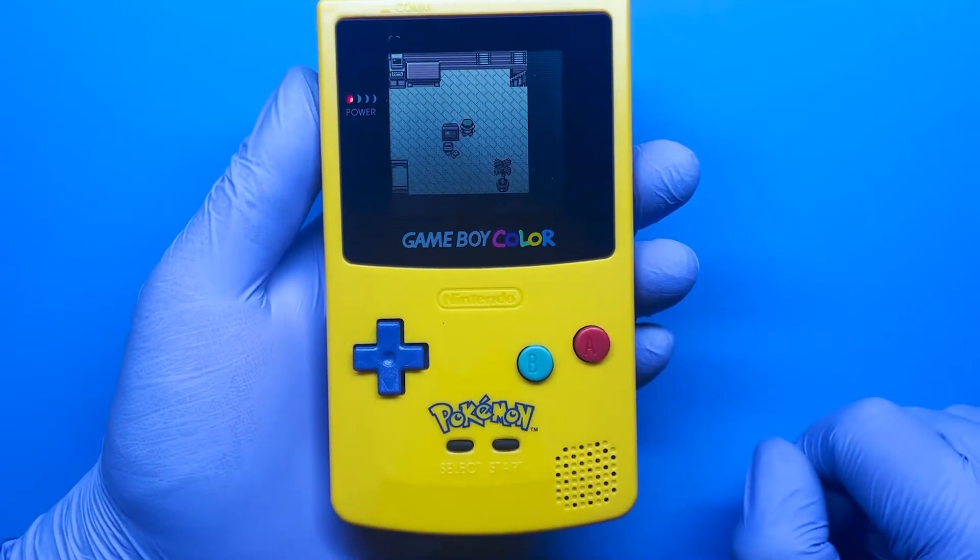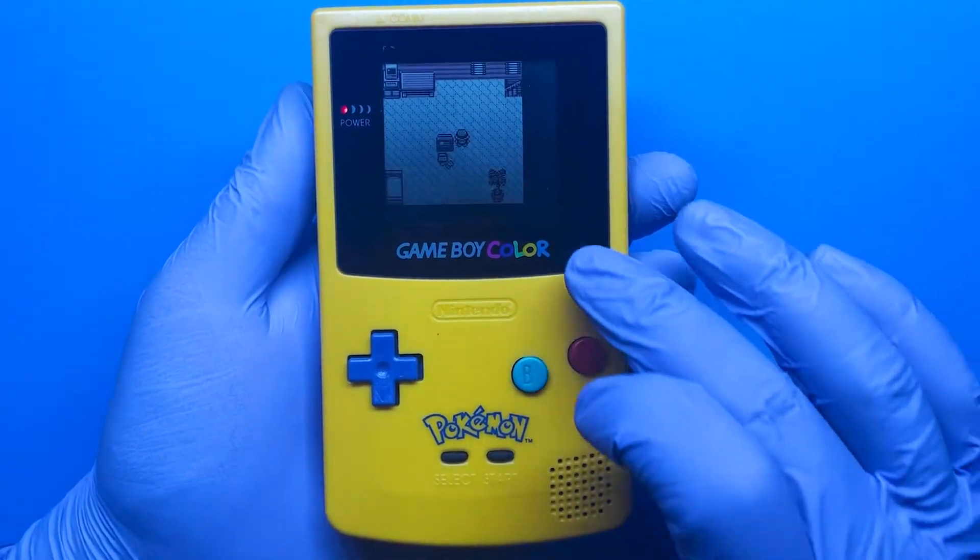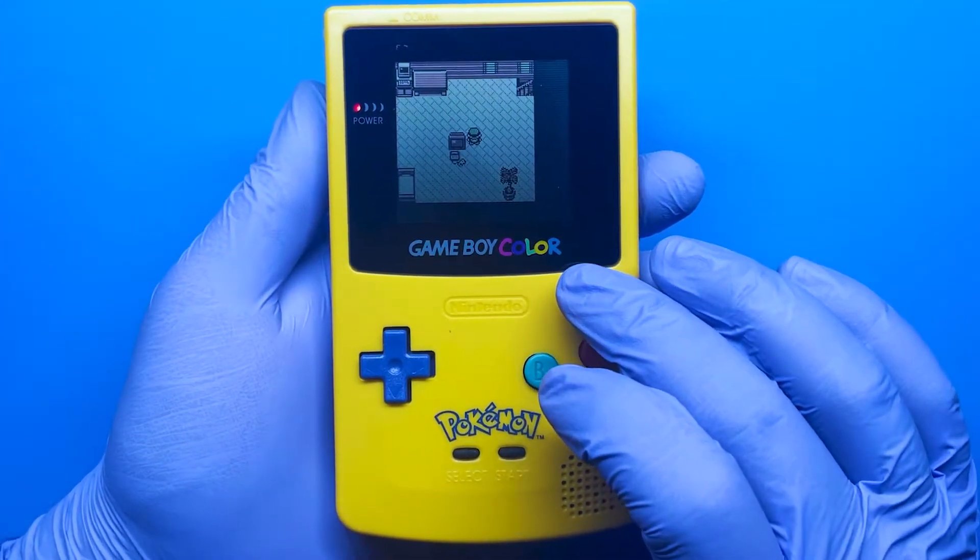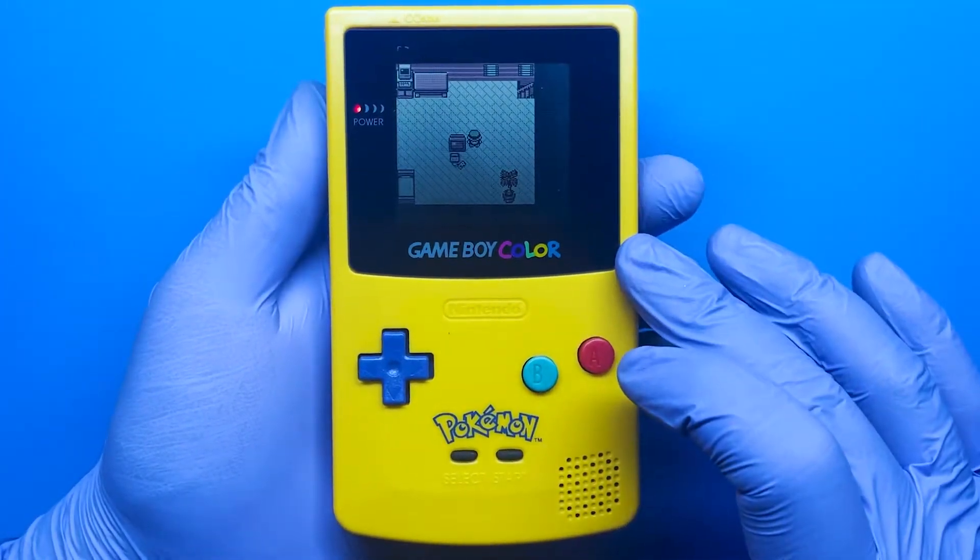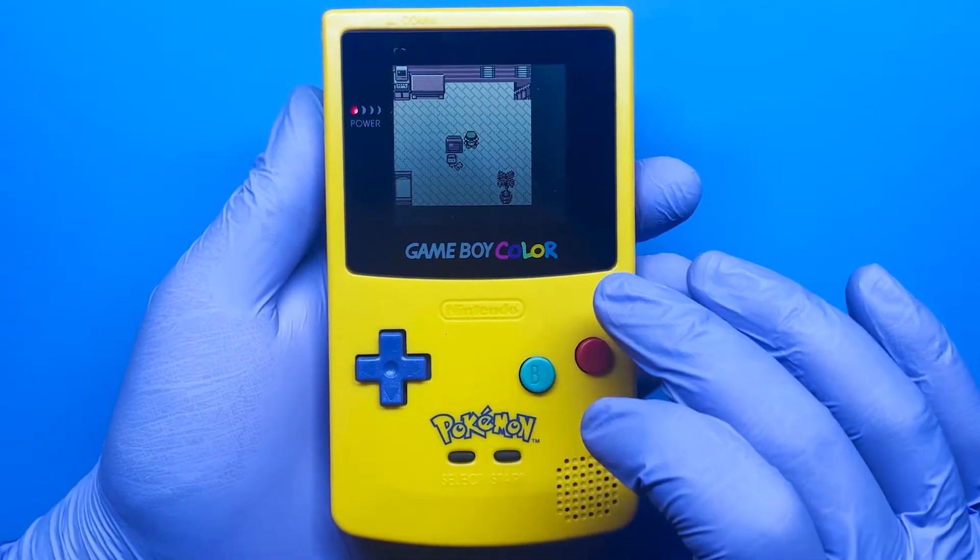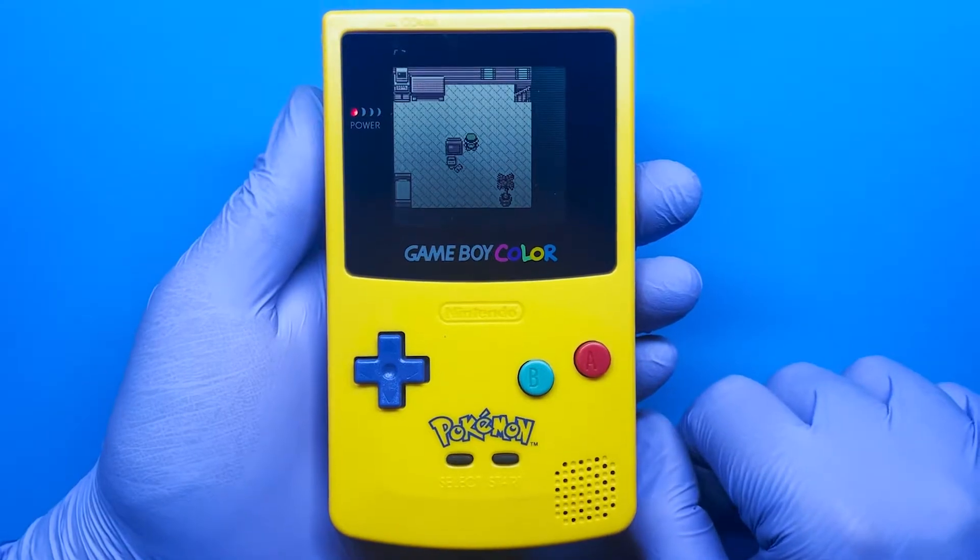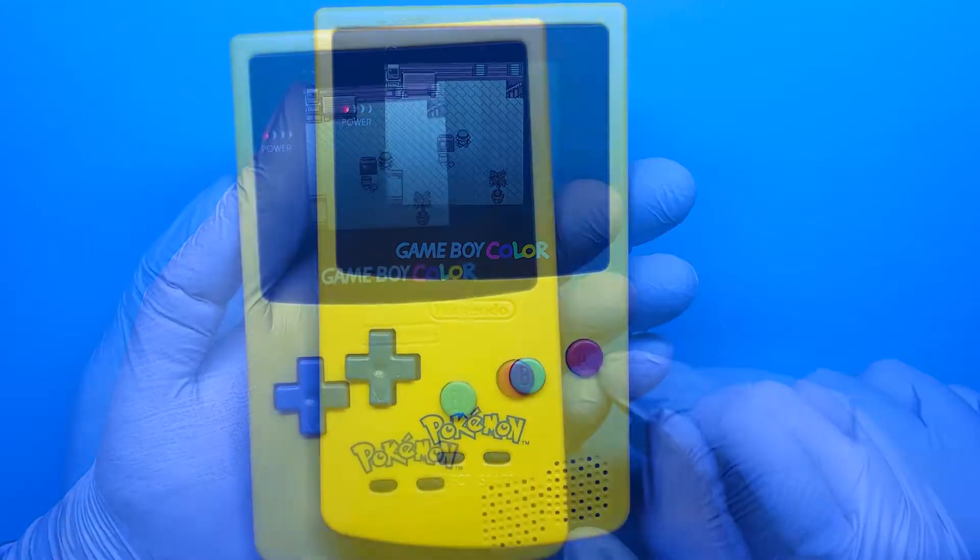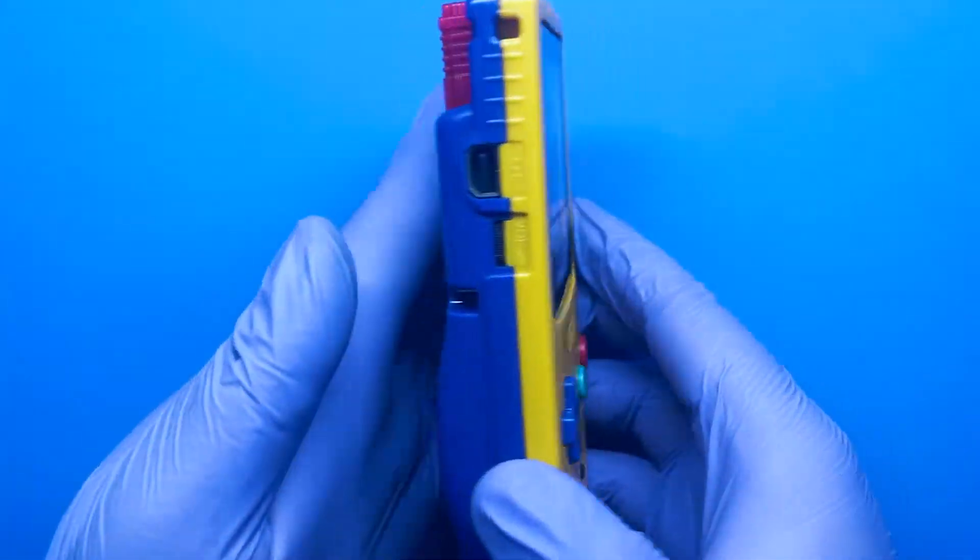And we also went ahead and restored, or not restored, but rather put a brand new screen. And this is a glass lens. And I really like the way this looks. And it seems to be a lot more durable than some of the lenses that come with the originals. So I really like the way this Game Boy Color turned out.